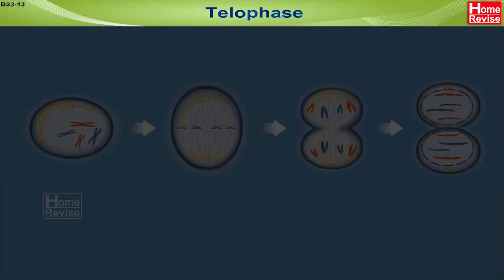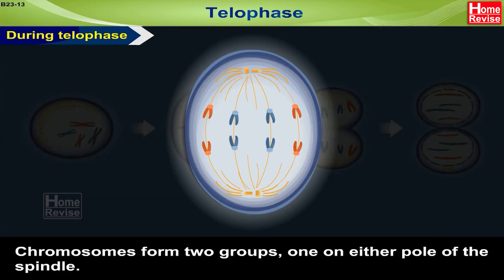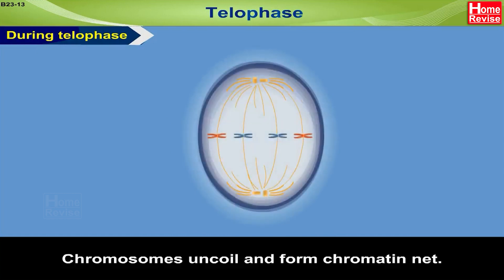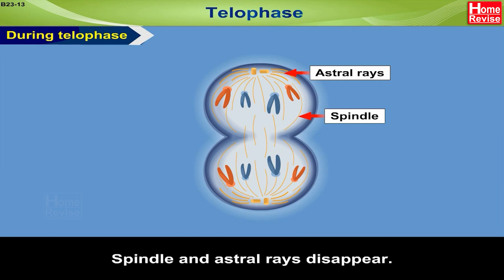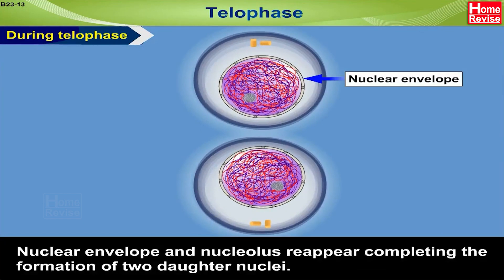4. Telophase: During telophase, chromosomes form two groups, one on either pole of the spindle. Chromosomes uncoil and form chromatin net. Spindle and astral rays disappear. Nuclear envelope and nucleolus reappear, completing the formation of two daughter nuclei.